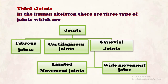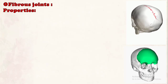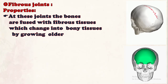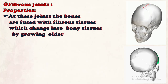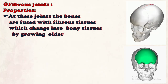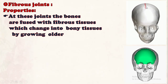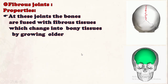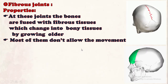First: fiber joint. Properties of fiber joint — at this joint, the bones are fused with fiber stitches, which change into bone stitches by growing old. There are eight bones in the skull and these bones are joined by fiber joints. By growing older, these change to bone and cannot move. Most fiber joints do not allow movement.